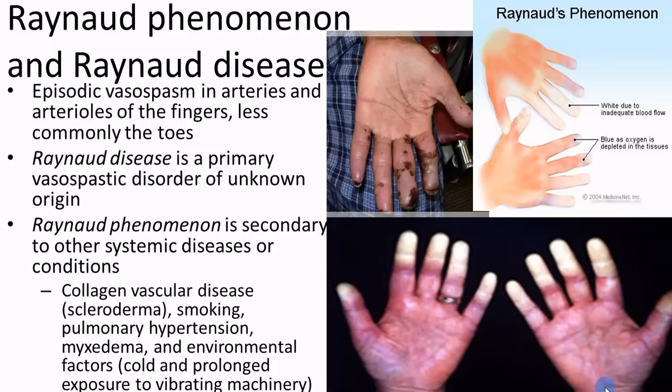Raynaud's disease involves vasospastic problems. The cause is typically idiopathic — we don't know exactly what causes it. It's higher risk in females. Temperature and smoking both have an effect, and their common denominator is vasoconstriction — they both make blood vessels constrict. People often wear mittens in cold weather or keep hands in pockets even in summer to prevent their hands from turning cold. Raynaud's phenomenon means it's secondary to some other identifiable cause. Raynaud's disease itself is idiopathic.